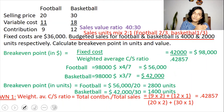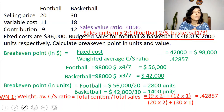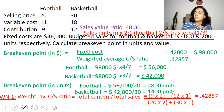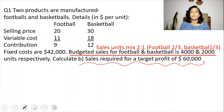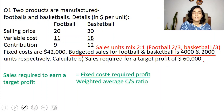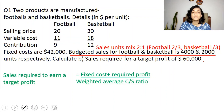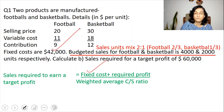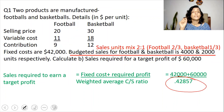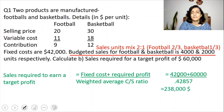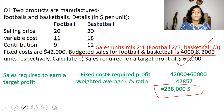So we can either find break-even in units first and convert to dollar, or find break-even in dollar first and convert to units — we have formulas for both, so use whichever the question asks for. For Part B, sales required for a target profit of $60,000: formula is (fixed cost + required profit) ÷ weighted average C/S ratio = ($42,000 + $60,000) ÷ 0.42857 = $238,000.